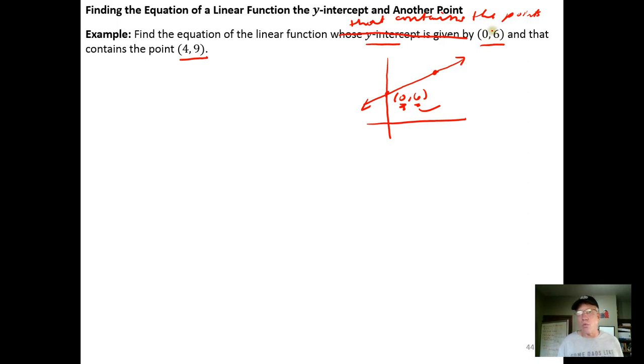So we're being given the y-intercept right here. We're being told, by being given the point (0,6), we're being told that b equals 6. And we know that a linear function, f(x), has the form mx plus b, so we've just been given the 6.